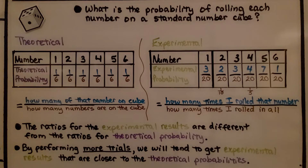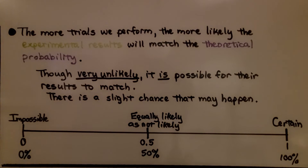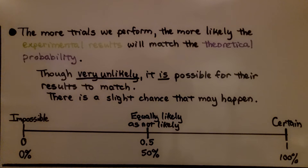By performing more trials — maybe a hundred, five hundred, or a thousand — we will tend to get experimental results that are closer to the theoretical probabilities. The more trials we perform, the more likely the experimental results will match the theoretical probability. Though very unlikely, it is possible for the results to exactly match; there's a slight chance that may happen.